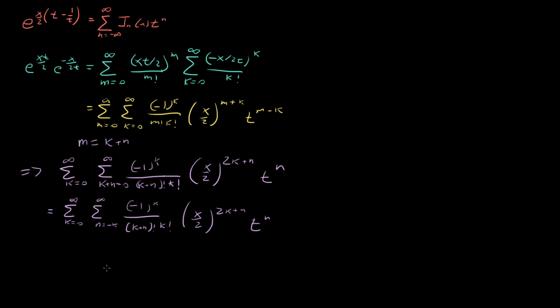We're just about done. What we want is a sum from n equals minus infinity to infinity, with our Bessel function. And we have something that looks exactly like that — the sum from k equals 0 to infinity has a term that looks exactly like the series form of our Bessel function of the first kind. However, our sum over n only goes down to minus k, not minus infinity.